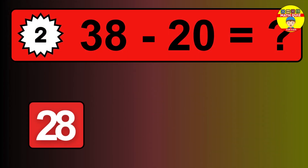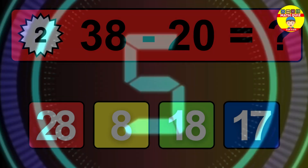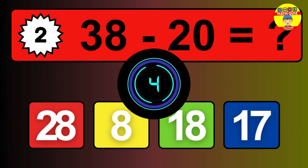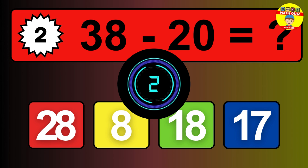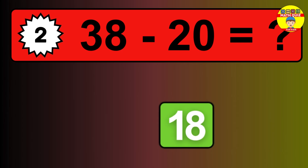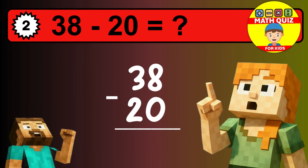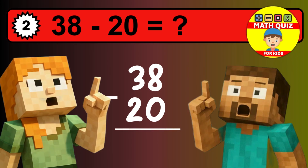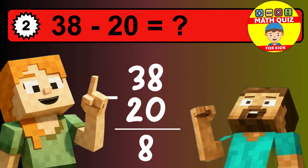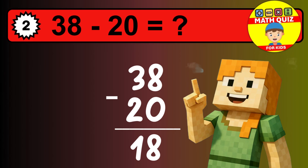What is 38 minus 20? Time to think. Let's solve this step by step. We start with the units: 8 minus 0 is 8. Then we go to the tens: 3 minus 2 is 1. The final answer is 18.